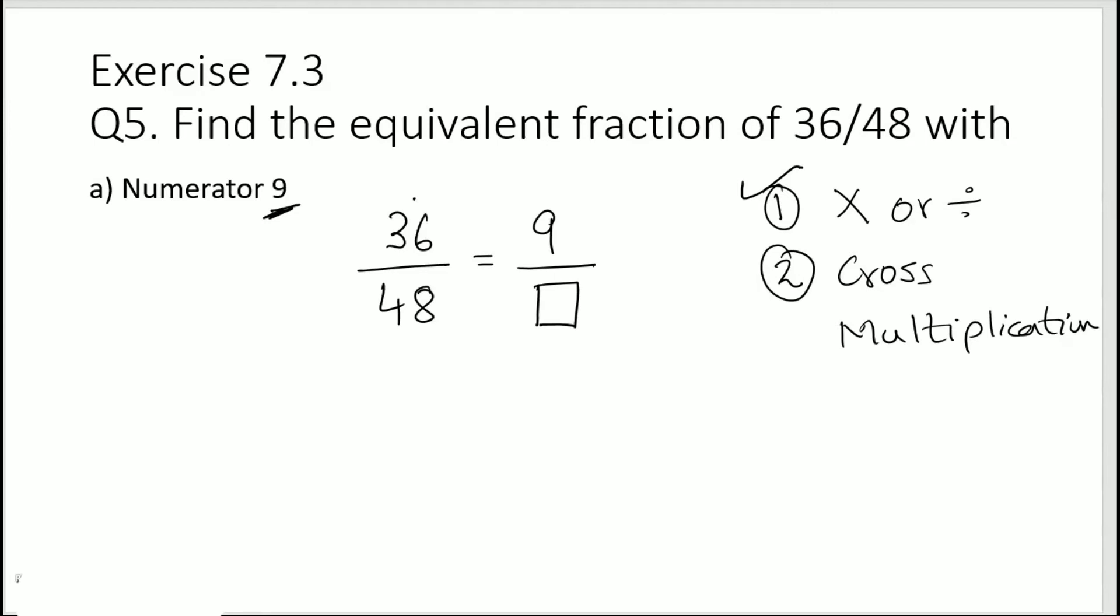So now ask yourself, 36 divided by which number gives you 9? We know that 36 divided by 4 is 9, or you can check yourself as 9 times 4 is 36. That means we are dividing the numerator by 4.